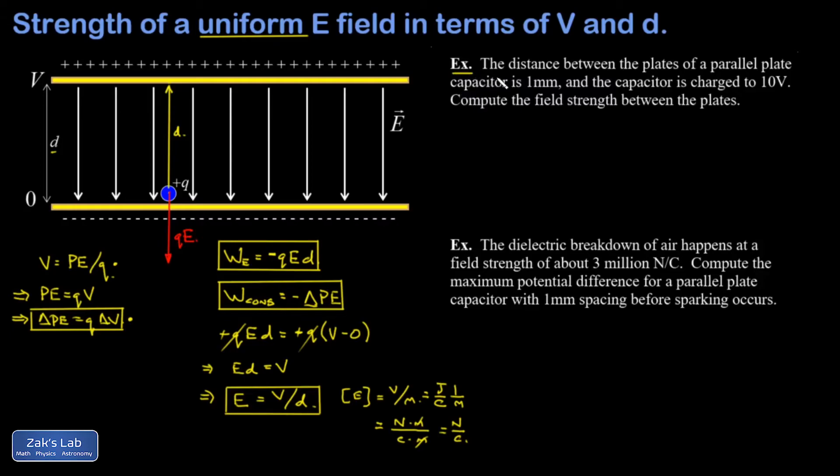In the first example, the distance between the plates of a parallel plate capacitor is 1 millimeter, and the potential difference is 10 volts. Find the field strength between the plates. This is a simple plug-in problem: convert D to 0.001 meters, V is 10 volts, so E equals V over D, which is 10 over 0.001, giving us 10,000 newtons per coulomb, or 10,000 volts per meter.